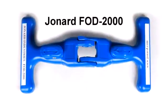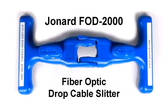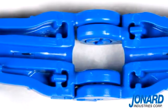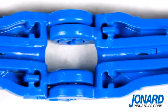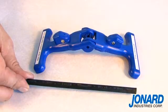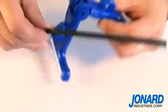The Jonard FOD2000 fiber optic drop cable slitter is a patent pending tool that simplifies the slitting of flat drop cable jackets at the end of the cable or mid span.